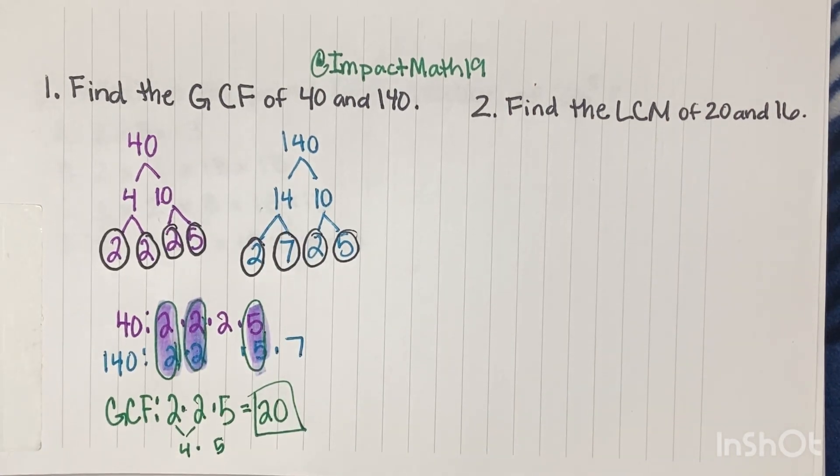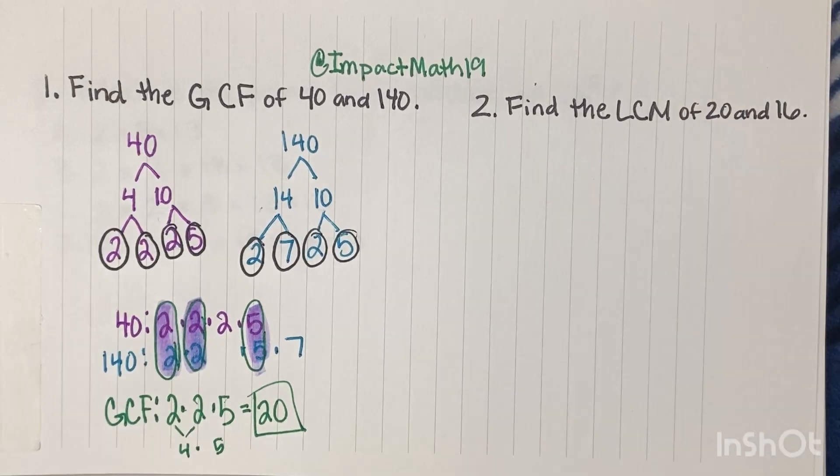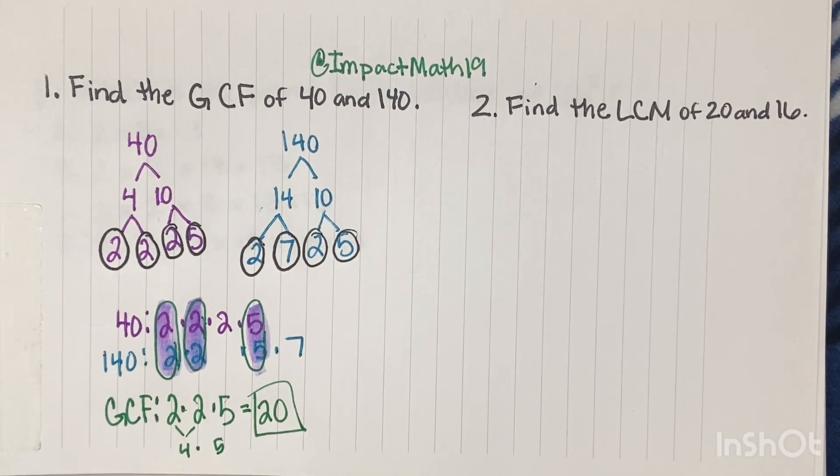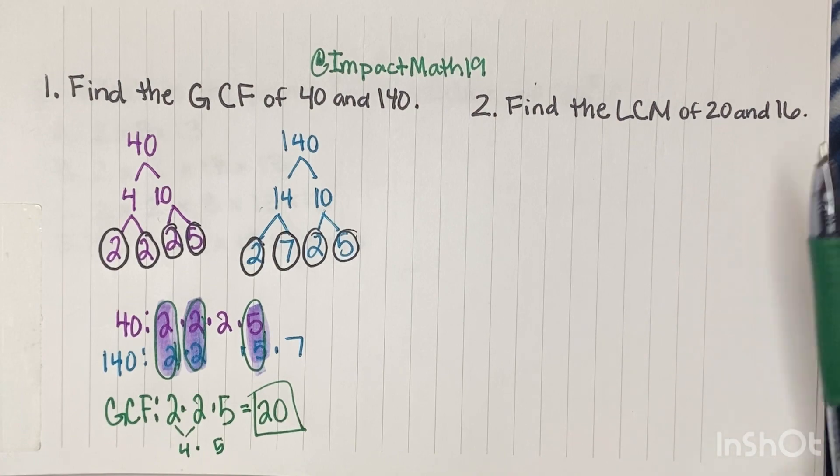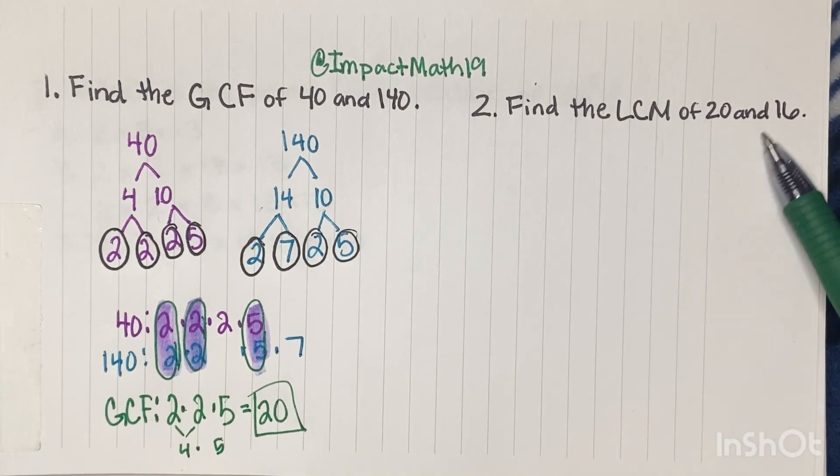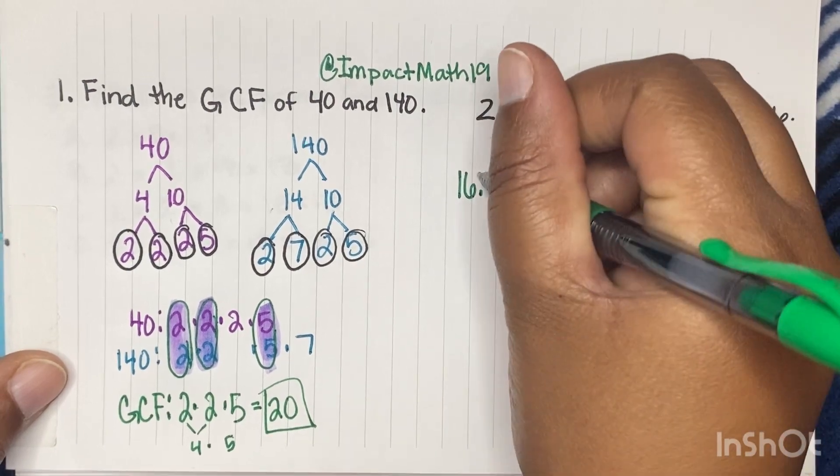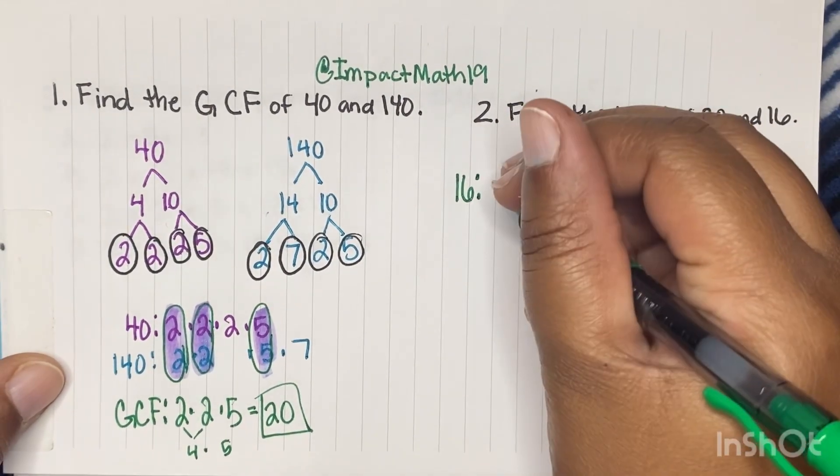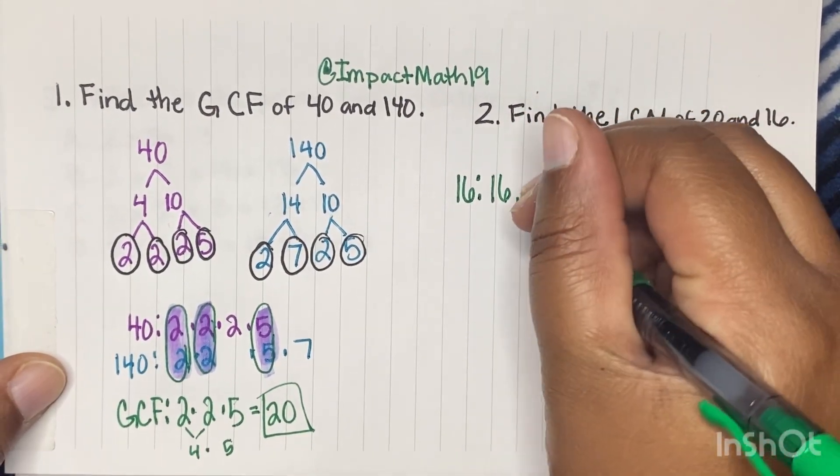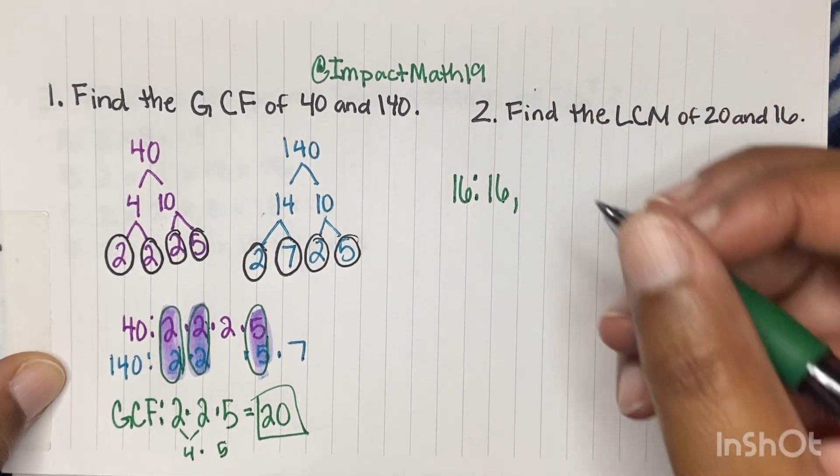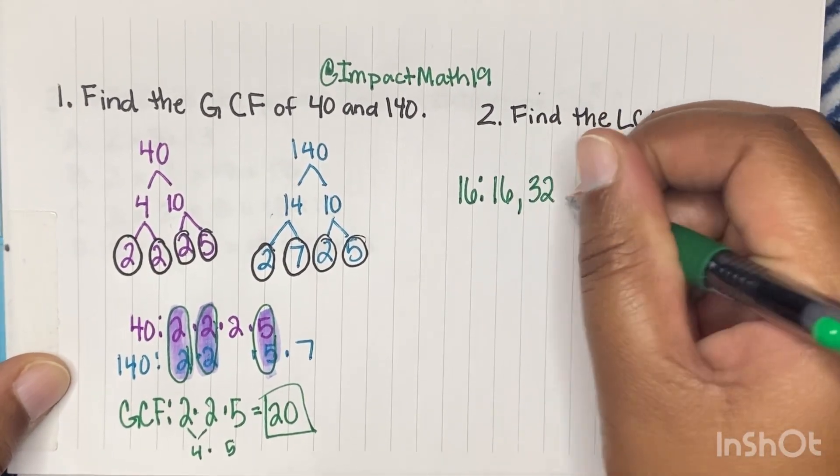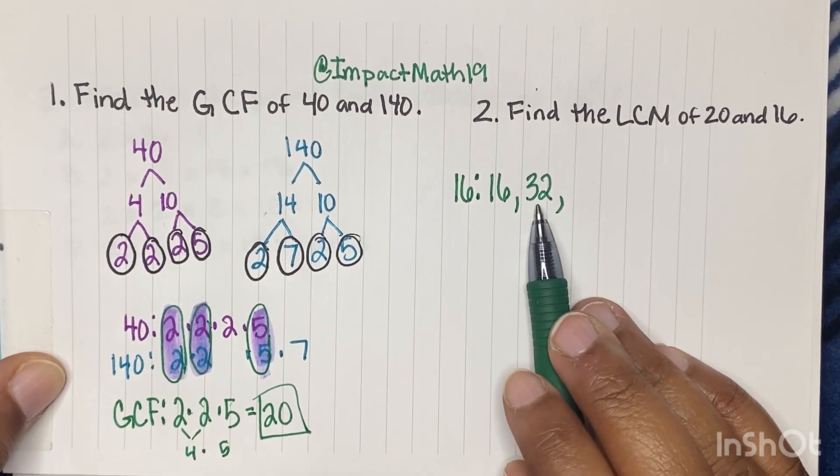Alrighty, let's talk about the LCM. So the LCM is the least common multiple. So multiples, what you think about is numbers that are bigger than the ones that you're given. So if we look at 16, our first multiple of 16 is 16. The next multiple is going to be 32.